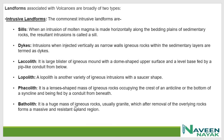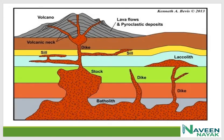Batholith is a huge mass of igneous rock, usually granite, which after removal of overlying rocks forms a massive and resistant upland region. To summarize intrusive landforms: sills are horizontal bedding plane structures; dykes are narrow wall igneous rocks in a vertical orientation; laccolith is dome-shaped; lopolith is saucer-shaped; phacolith is lens-shaped occurring at anticlines or synclines; and batholith is a huge mass of igneous rock forming upland regions.